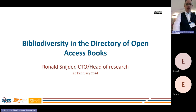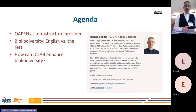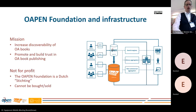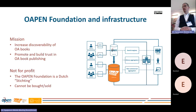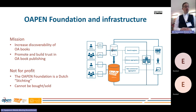I'm going to talk about bibliodiversity in the Directory of Open Access Books, and about OAPEN as an infrastructure provider, and how in the Directory of Open Access Books we can actually enhance that. OAPEN's mission is to increase the discoverability of Open Access Books and to promote and build trust in Open Access Books publishing. We are a not-for-profit organization which cannot be bought or sold.